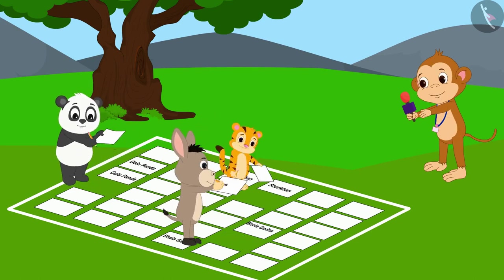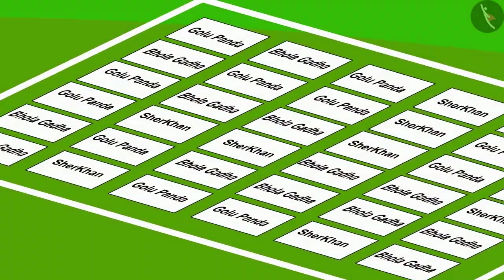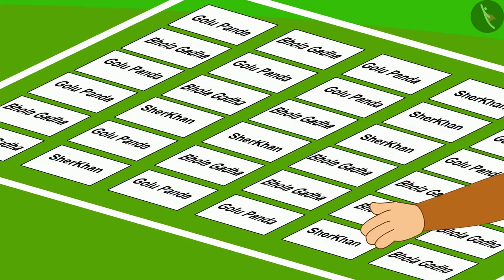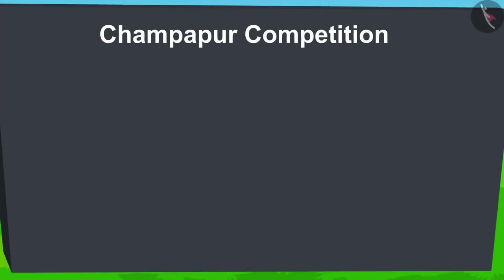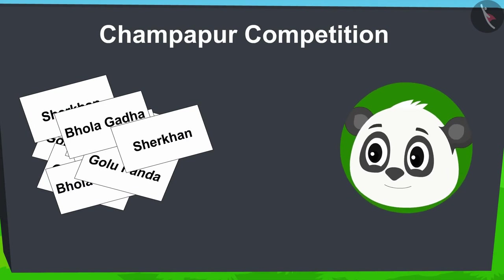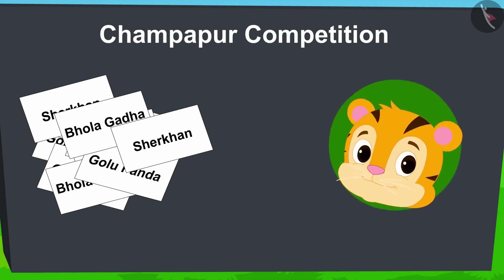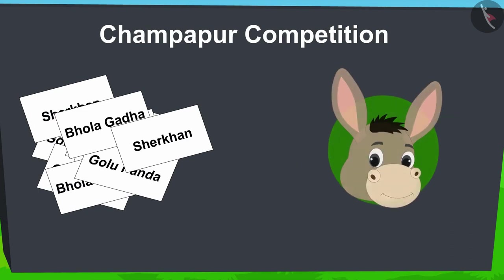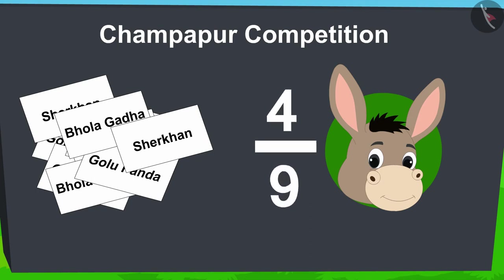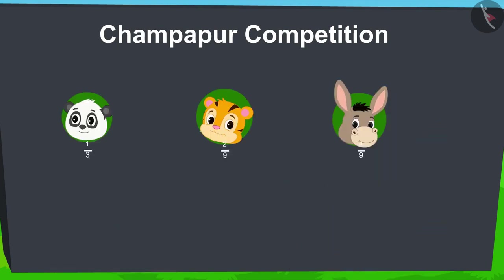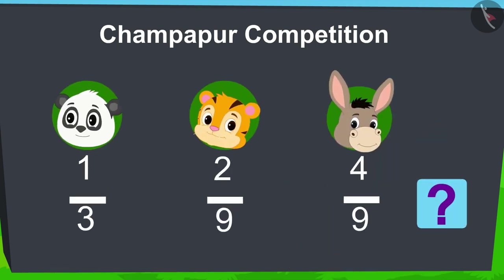Time is up and now the counting has begun. On counting, it was found that Golu's name is written on one third part of the total paper pieces. Shere Khan's name on two ninth part and Bholla's name on four ninth part. Children, can you tell who is the winner of the competition?